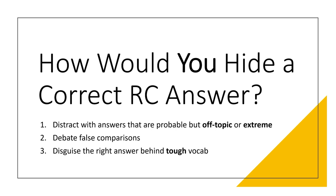I've got a strange question for you. How would you hide a correct reading comprehension answer? Imagine you are creating questions for ETS — you're hired by them, you know what the right answer is, and you want to hide it by surrounding it with incorrect answers. How would you hide that correct RC answer?